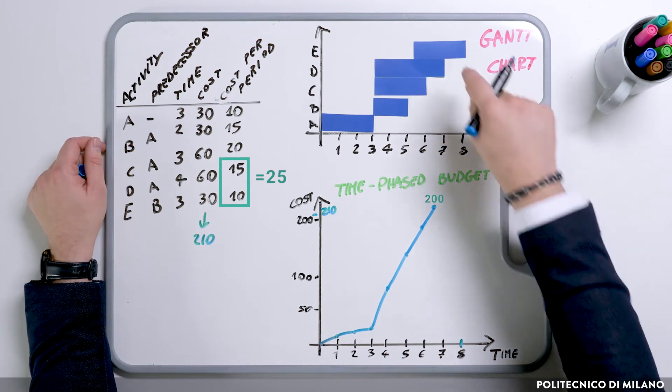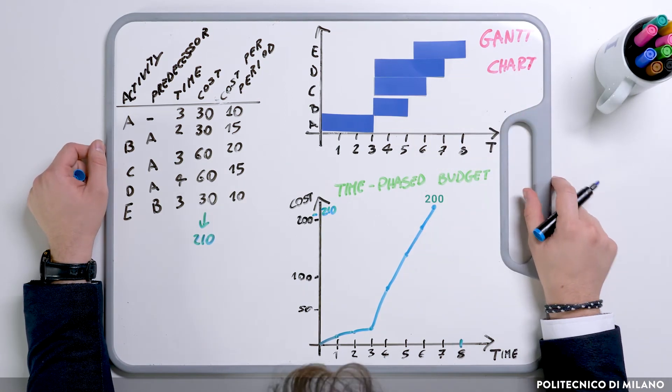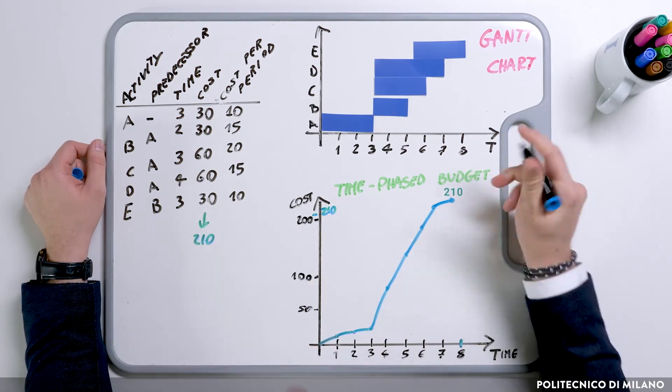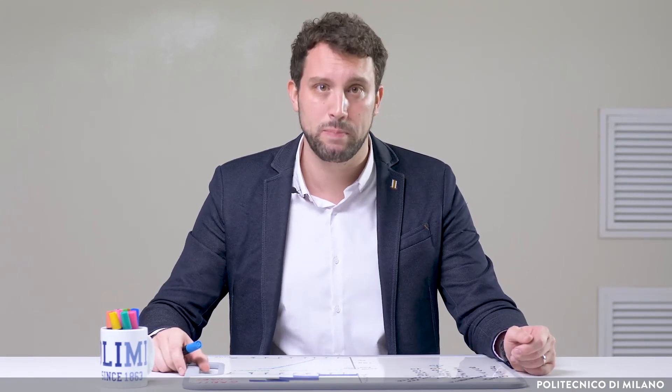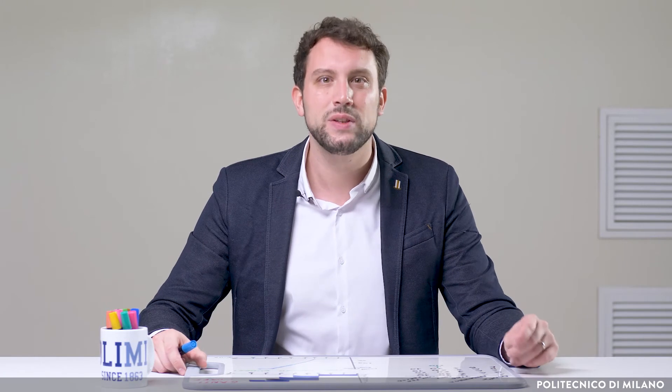Finally, in period 8 we'll have only activity E, moving from 200 to 210. The value of 210 is exactly the planned cost of this example, also known as Budget at Completion, or BAC. This example shows how our project will use the planned resources over time. There are many software tools that, with the right information, would create this for us. I would invite you to use the tool, but to pay particular attention to understanding how it works, to ensure there are no hidden hypotheses or options in the calculation you are unaware of — since you'll be using this tool to make relevant decisions on your project.